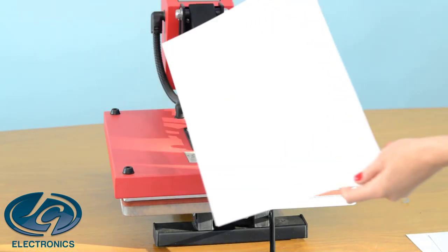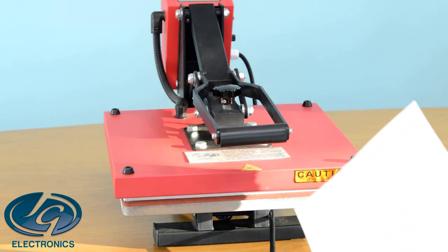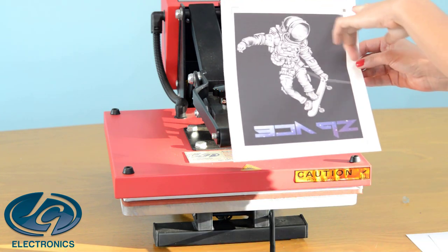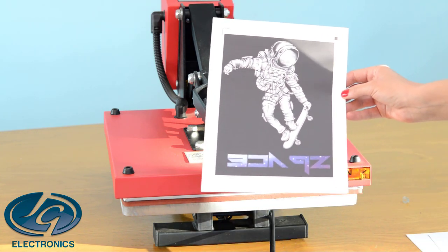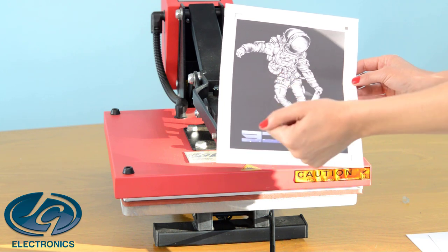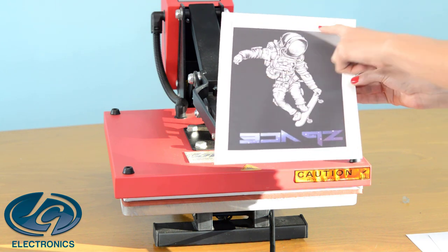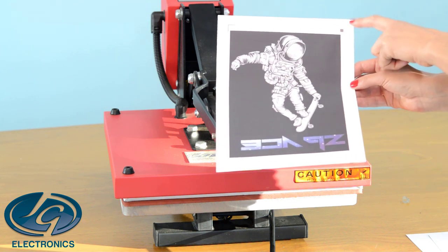The first step to use this flex is to use sublimation paper. You're going to use your registration marks in Silhouette Studio and you're going to mirror your image when you print. So that little square will be in the right-hand corner.